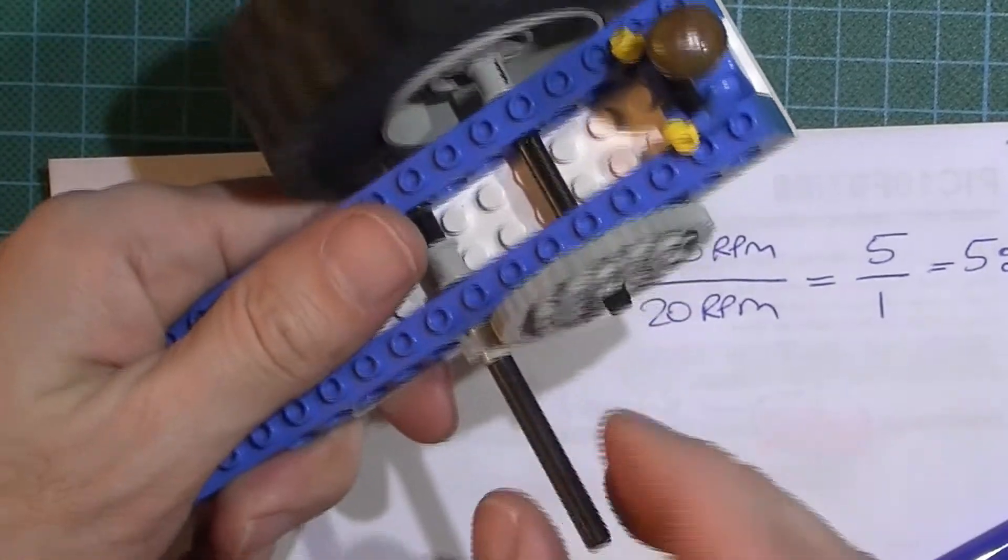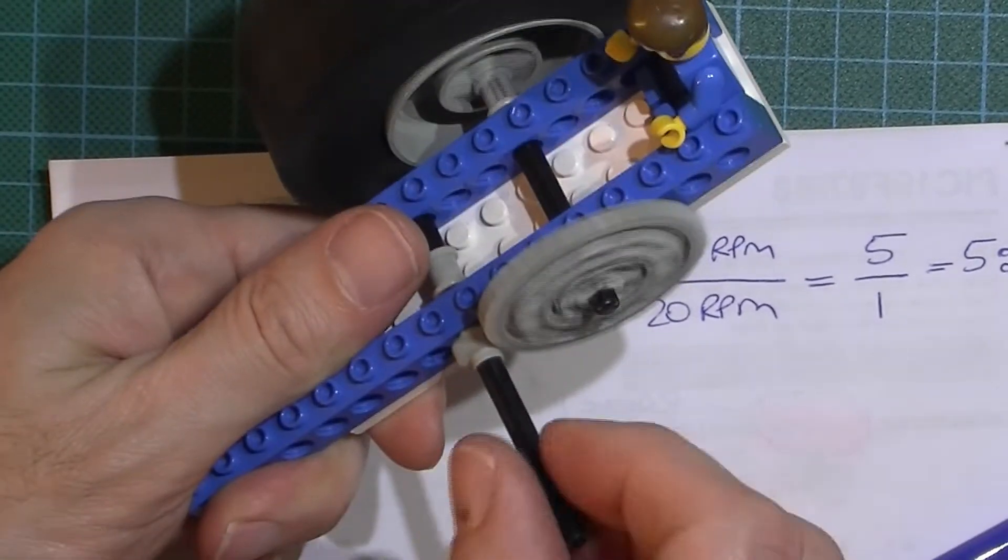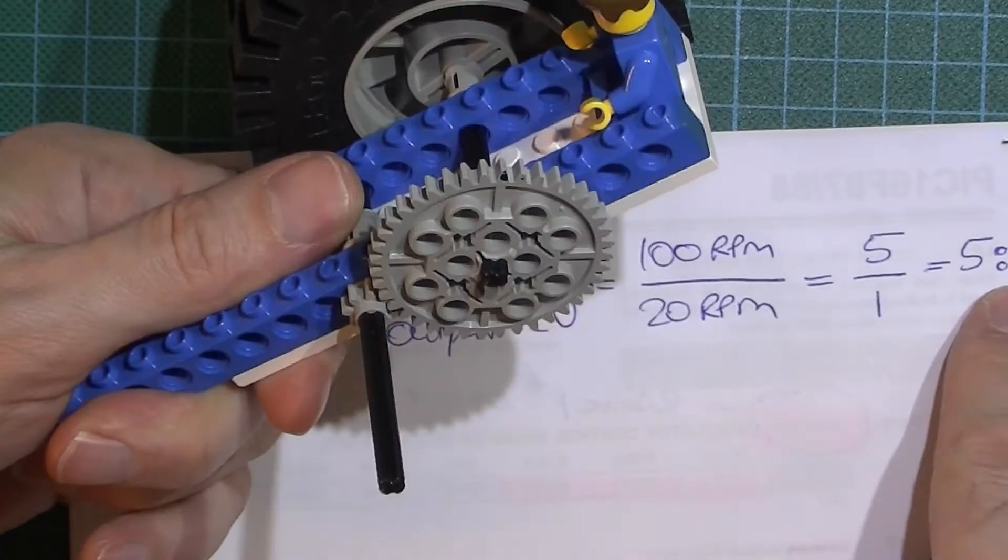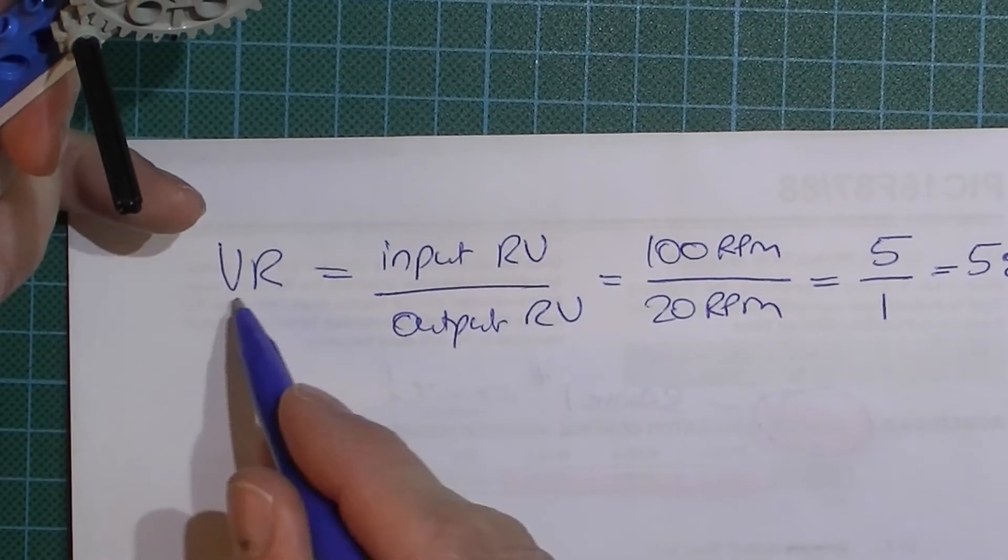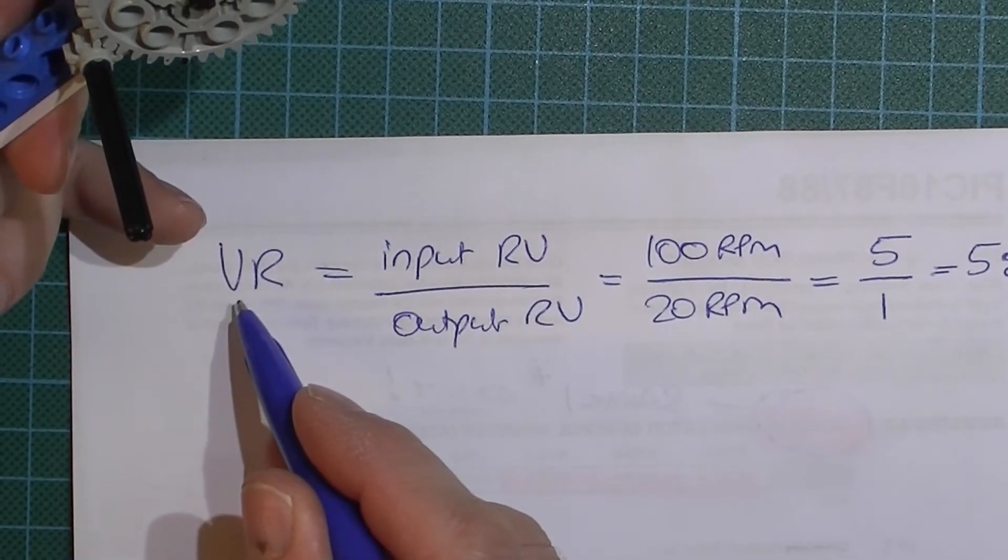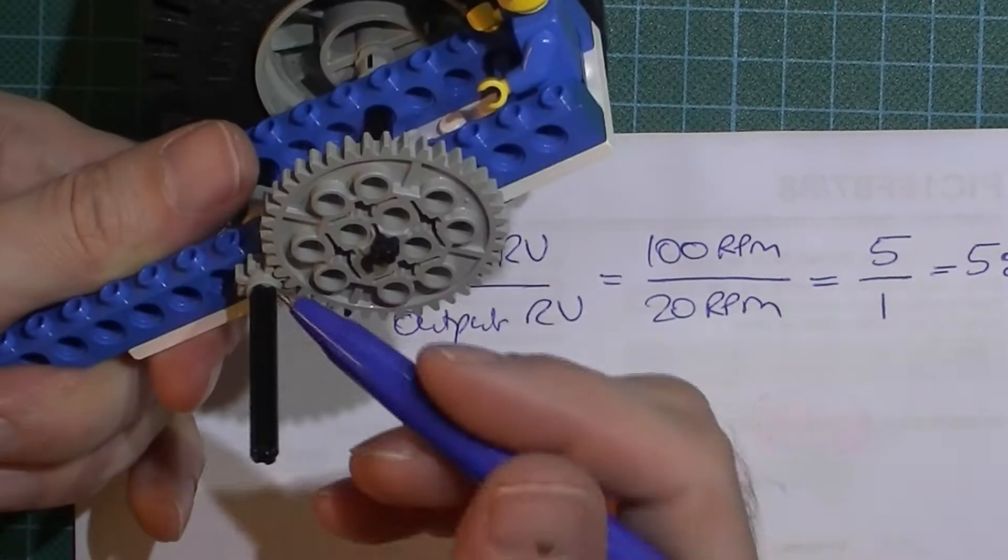In other words, meaning that the input spins 5 times for every turn of the output. So that's quite straightforward, isn't it? Remember, velocity ratio. It's just a ratio of the two velocities.